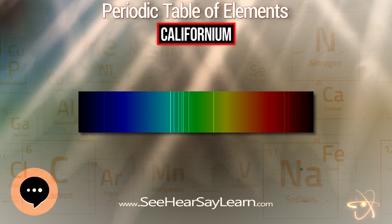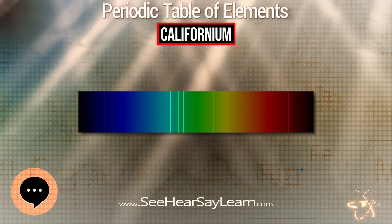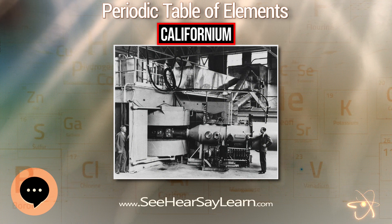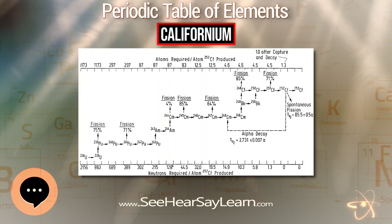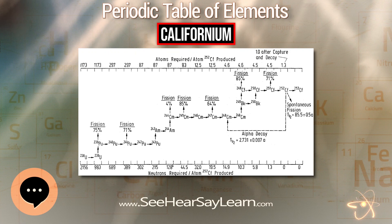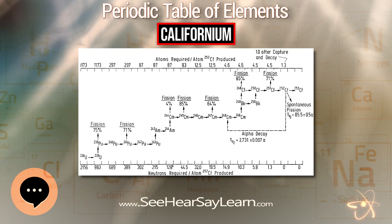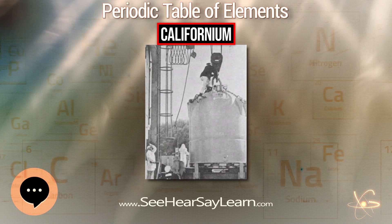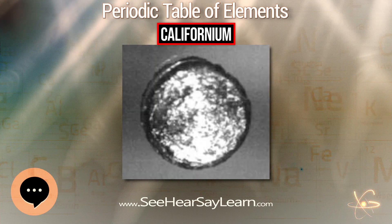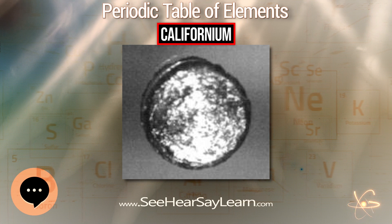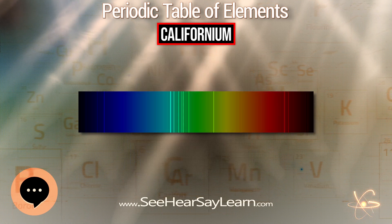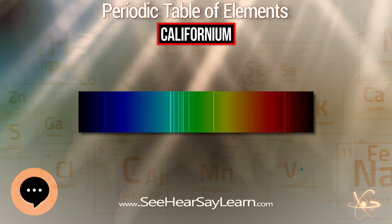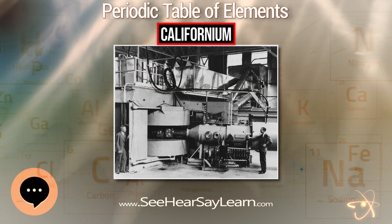Californium is a silvery-white actinide metal with a melting point of 900 ± 30 degrees C and an estimated boiling point of 1745 K. The pure metal is malleable and is easily cut with a razor blade. Californium metal starts to vaporize above 300 degrees C when exposed to a vacuum. Below 51 K, californium metal is either ferromagnetic or ferrimagnetic.